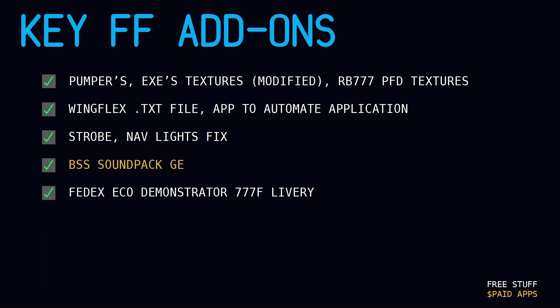WingFlex — there's a text file available on xplane.org, and there is an application I've linked to in my guide to automate that. I tend to not use that because I'm not going to look outside while flying that much, but it's up to you. There is a strobe and nav light fix to make sure that the lights kind of move if you have WingFlex, though I don't think it necessarily works all the time. Some things don't always work. Blue Sky Simulation Soundpack GE — I did buy this. This is fantastic. There is another freeware one from FTSIM+; I found it a little harder to install, but the BSS Soundpack for GEs is absolutely phenomenal.